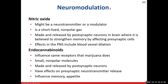Nitric oxide is a gas with a very short half-life that acts as a neuromodulator. In the peripheral nervous system it causes vasodilation (blood vessel dilation) — beneficial for people with circulatory or cardiac issues such as angina (decreased blood flow to heart tissue). Nitroglycerin has similar vasodilating effects to nitric oxide and is used to treat cardiac pain. Endocannabinoids are another type of neuromodulator.